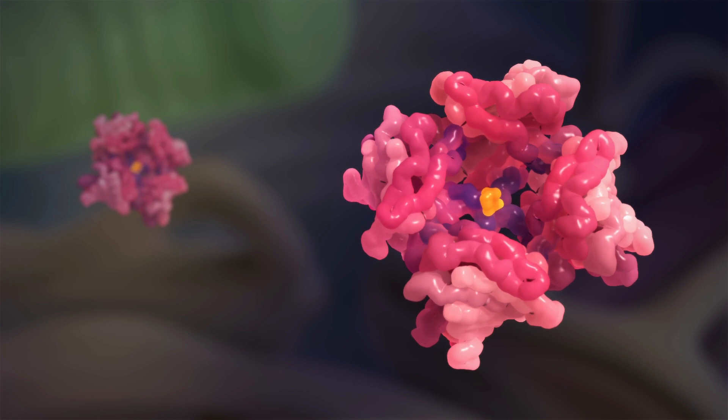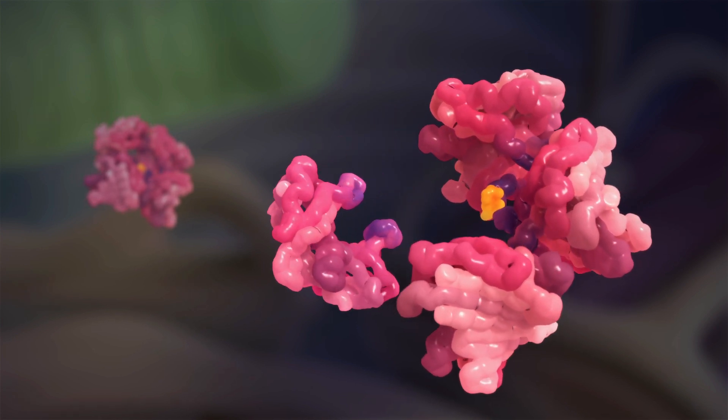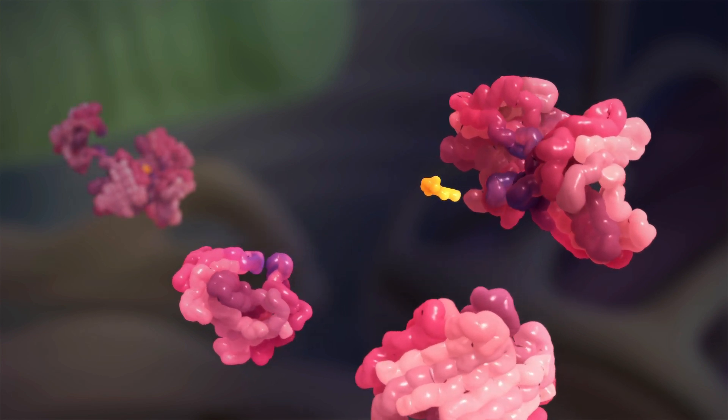In ATTR amyloidosis, the four-unit complex is made up in the normal way, but is unstable and prone to breaking up.